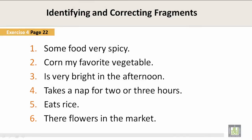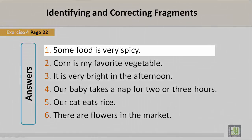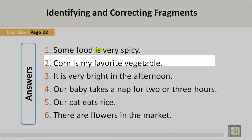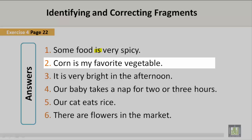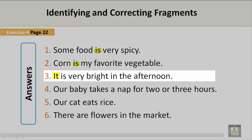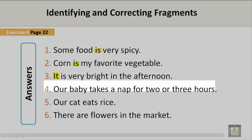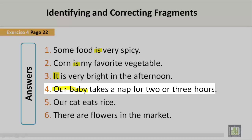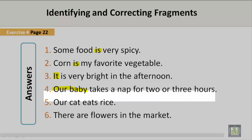I will read it for you. Number one: 'Some food is very spicy.' Number two: 'Corn is my favorite vegetable.' Number three: 'It is very bright in the afternoon.' Number four: 'Our baby takes a nap for two or three hours.'